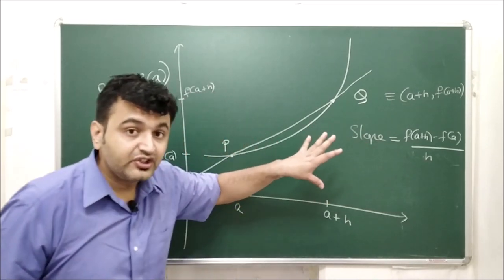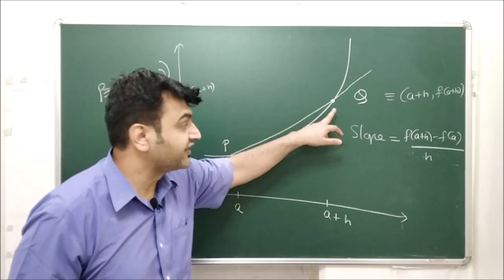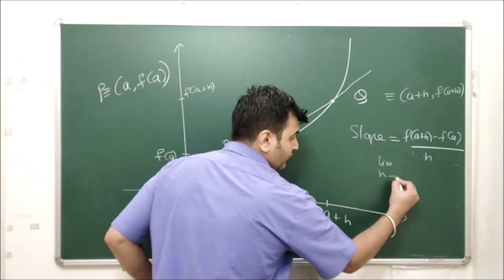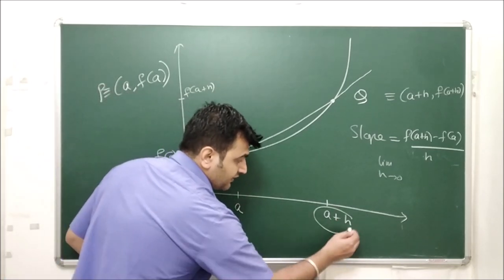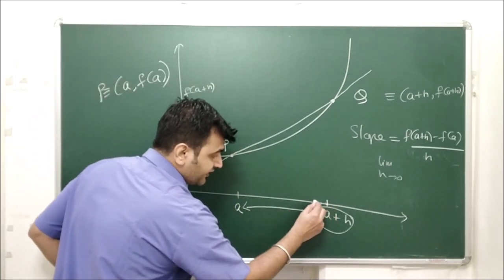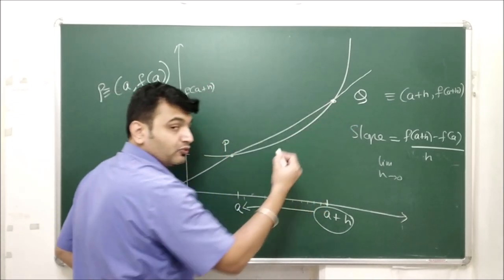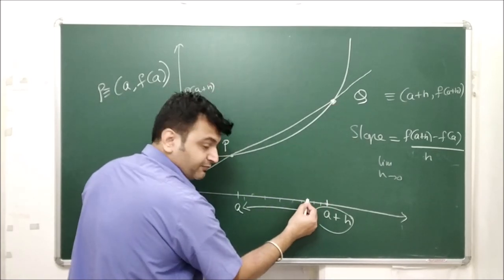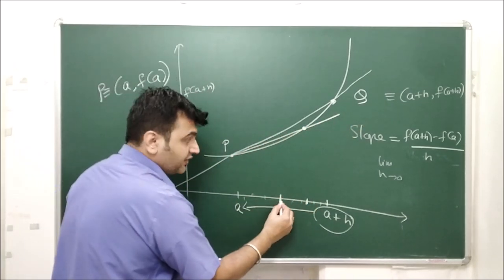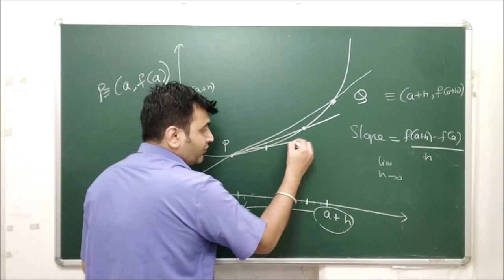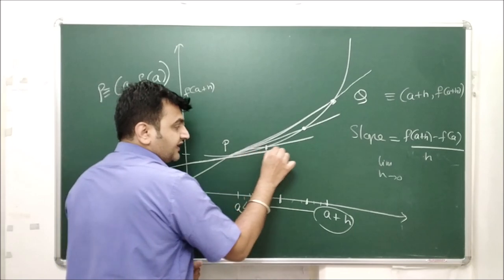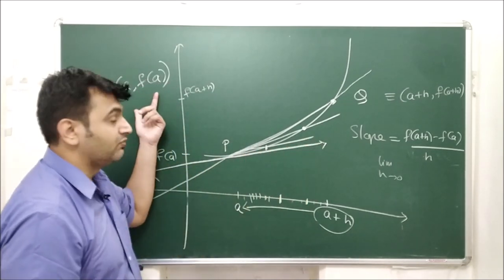If you ignore the limit, that ratio is the slope of the secant line joining P and Q. Now when we take the limit as h → 0, a+h approaches a. As this happens, point Q keeps moving closer and closer toward P, and the slope of the secant line keeps changing accordingly.